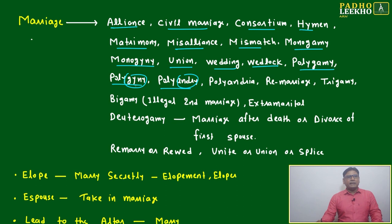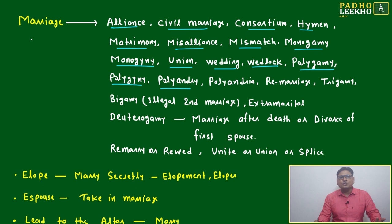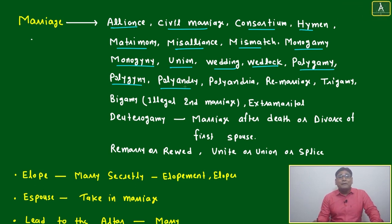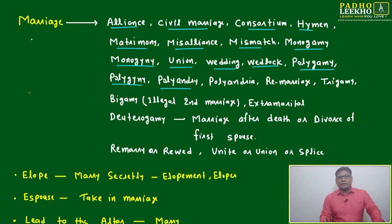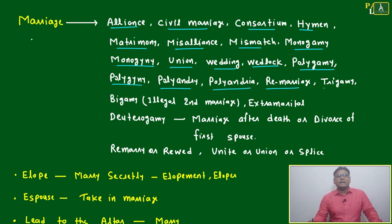Additional words include polygyny and polyandry. 'Gyne' means women and 'andros' means man — andrology relates to man. So polygyny means one man having many women. Polyandry means one woman having many men. Still in India, you can take the example of Mahabharata — Draupadi was having five husbands. That is the polyandry system.